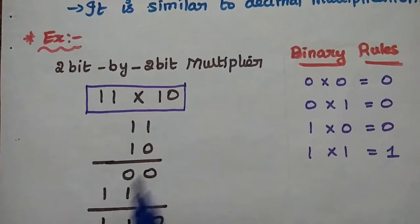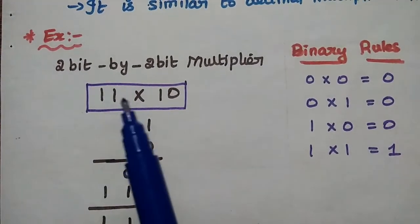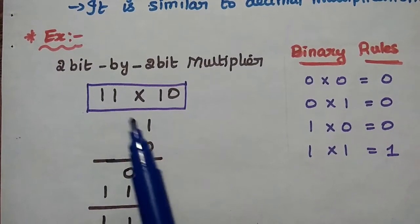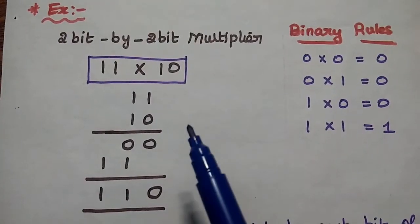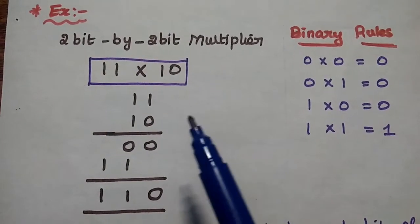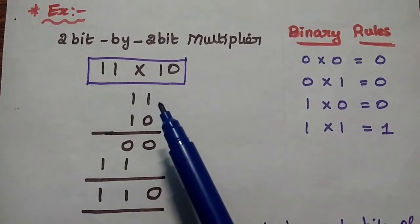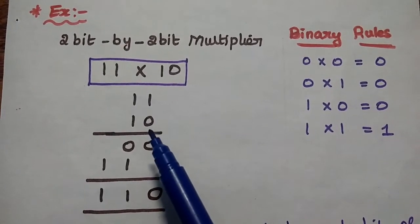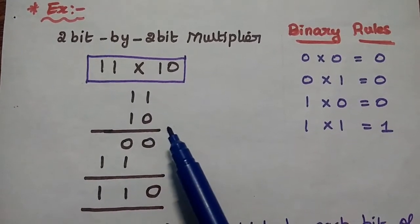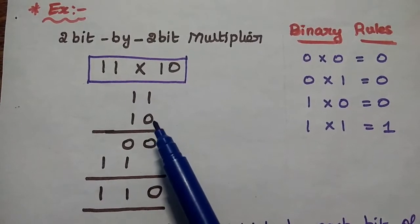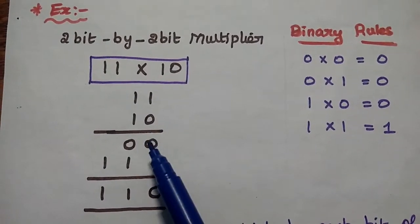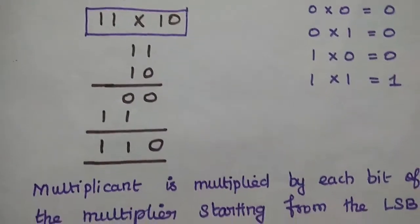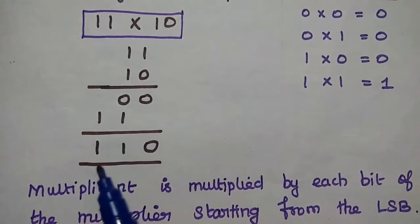Consider the example of a 2-bit by 2-bit multiplier. Here the first one is the multiplicand and the second one is the multiplier. Similar to decimal multiplication, we multiply the multiplicand by each bit of the multiplier, starting from the least significant bit. So 0×0, then 1×1, and so on. Then we add. The answer for this multiplication is 110.